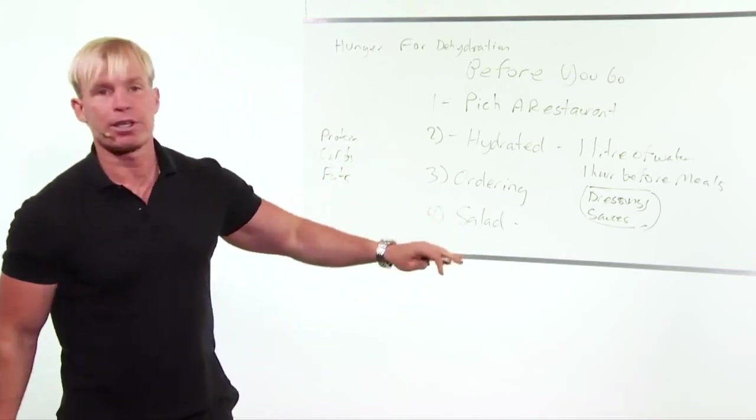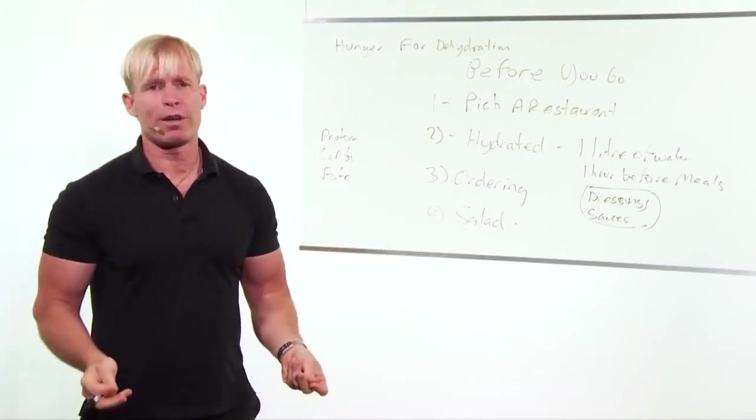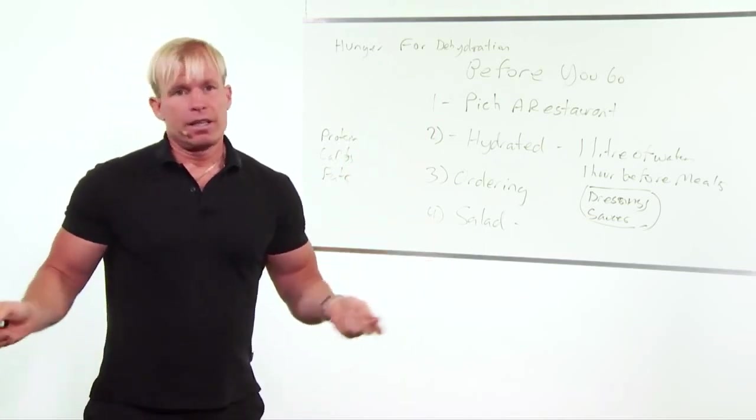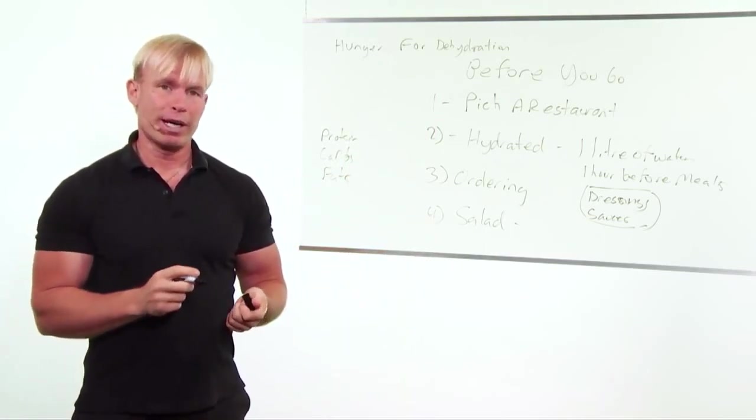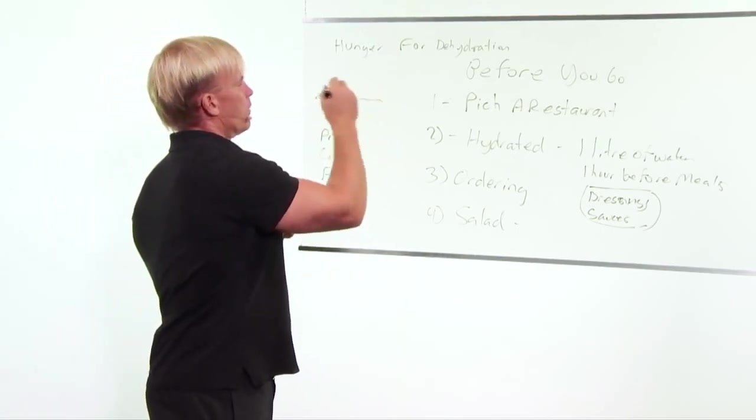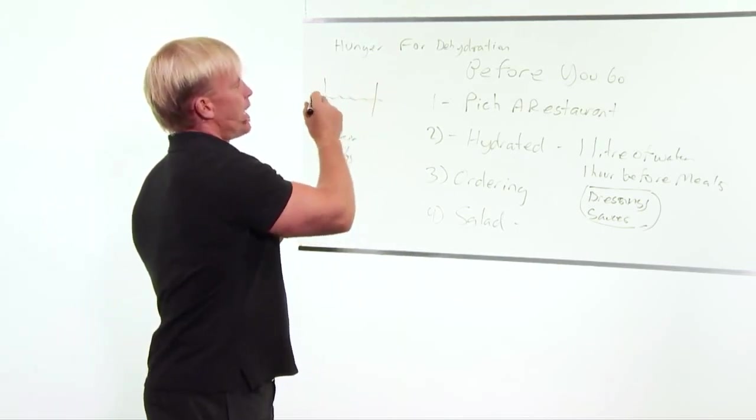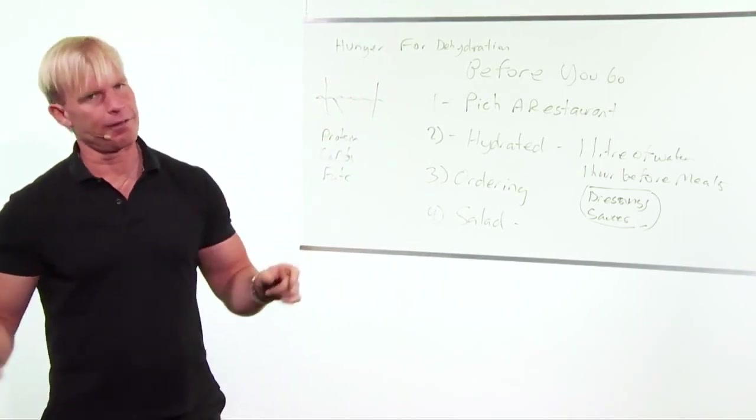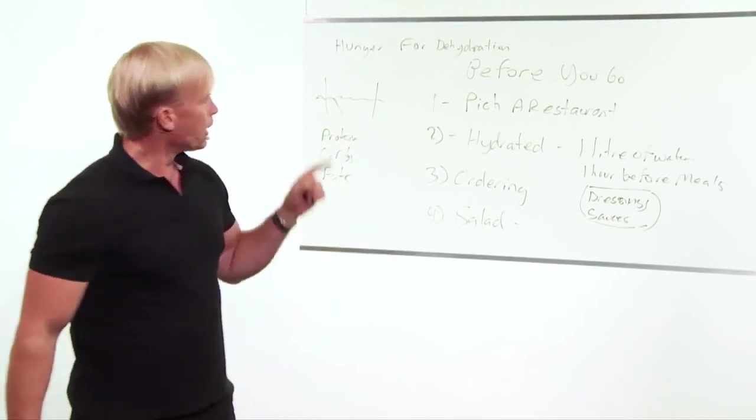But oftentimes, I go to a restaurant and maybe out with friends, I don't have the option of choosing the restaurant. They have very few options. So I'll eat a protein shake before I go. And that keeps my blood sugar, remember our little blood sugar line, stable. If you go to a restaurant and you're in low blood sugar, you're going to have trouble. You're going to eat too much. Okay?